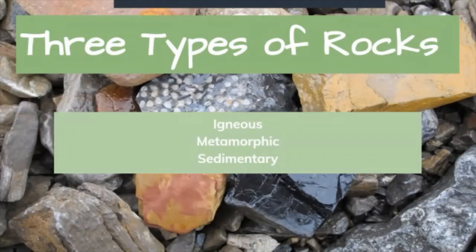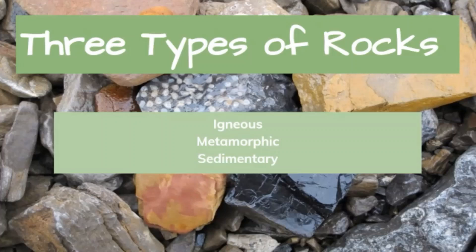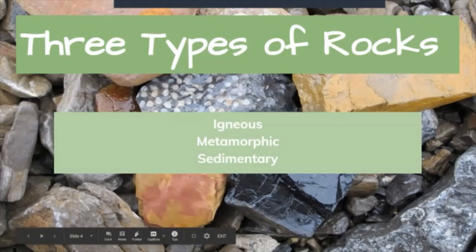There are three basic types of rocks and we're going to show you examples of each and give you some characteristics of each. The first one we'll talk about are igneous rocks, then sedimentary rocks, and finally metamorphic rocks. You may have seen these and not realized what type of rock they are. Mr. Jeff is going to talk about igneous rocks and show you some examples.